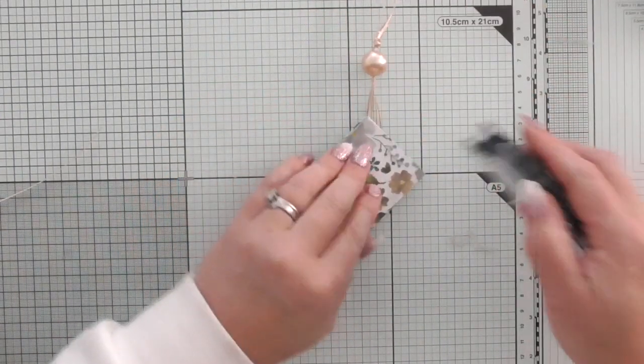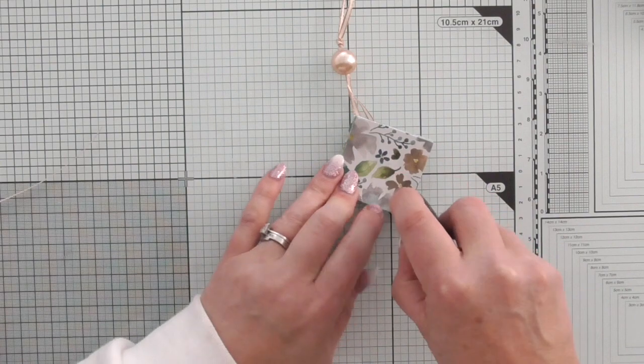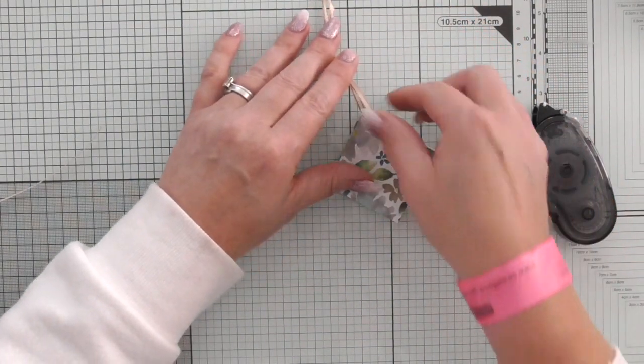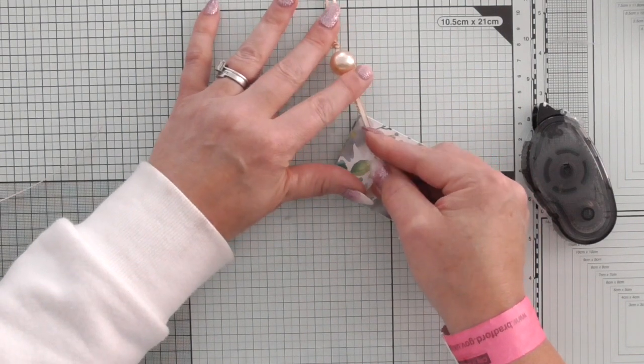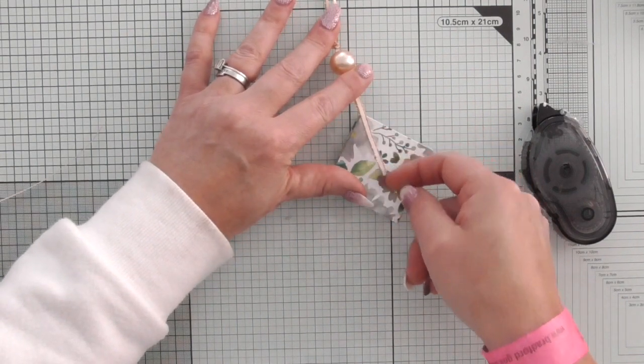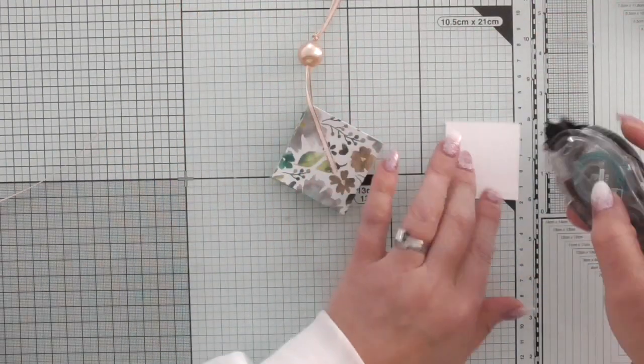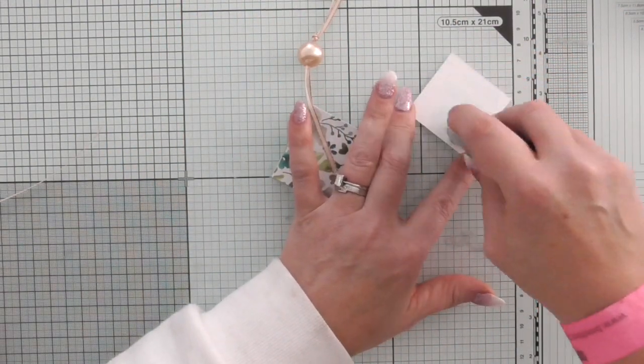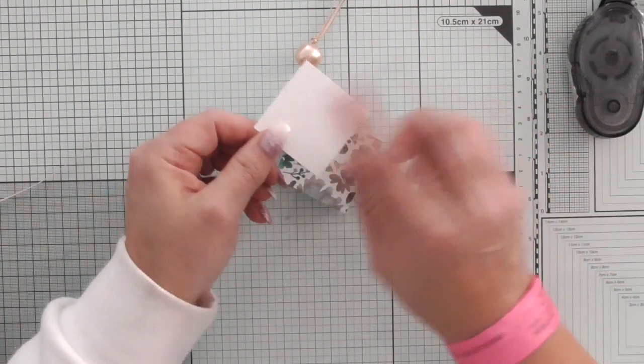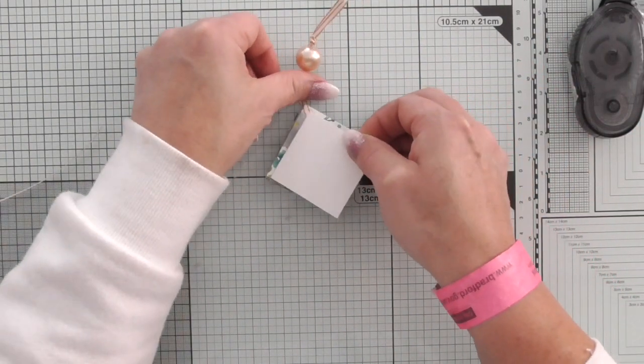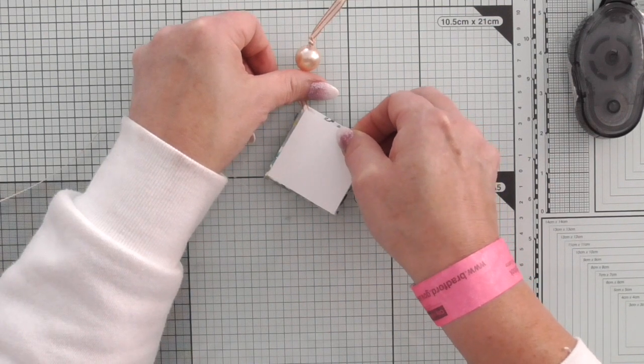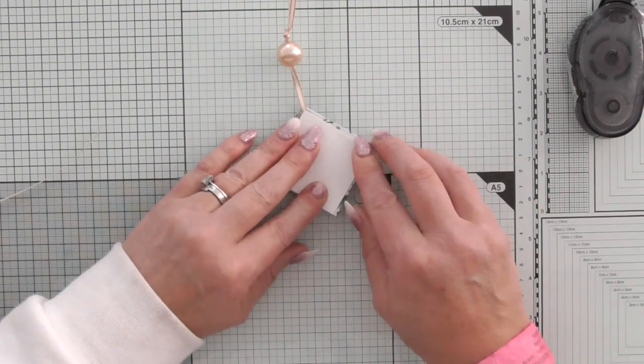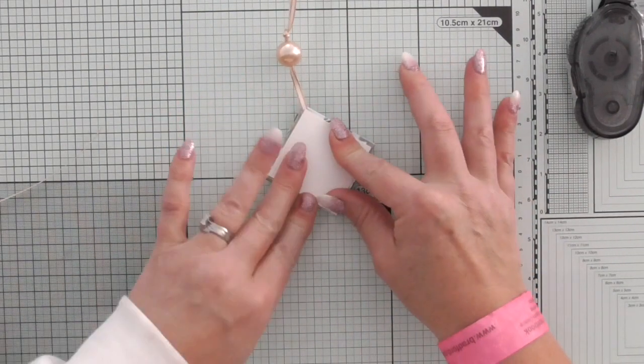And then we're going to turn it over and we're going to do the same at the back. And we're going to attach that ribbon pulling it straight. And then I do have a back panel. You could stamp on the back as well or you could layer it with more DSP to make it look a bit nicer. And I'm just layering that on there which will help hold that ribbon on.